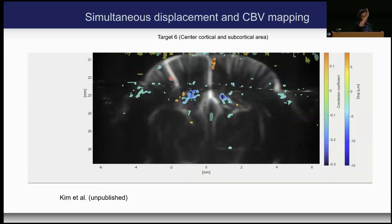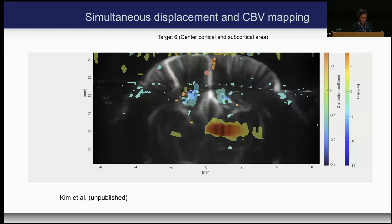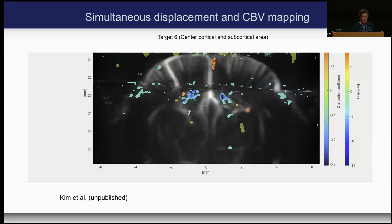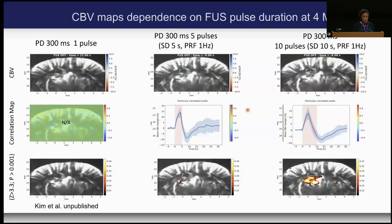When we target the center of the brain, both hemispheres light up — most CBV change is subcortically, relatively close to the hippocampus and thalamus. This varies with pulse duration: with one pulse on the left hemisphere, the thalamic region near the hippocampus responds most. As we increase the number of pulses, it responds more and more — you can see more red displacement. When we threshold with the correlation map, we also see the CBV change there. Similarly, you can see the effect increasing with pulse duration and number of pulses. Pressure also matters — from nothing at 1 MPa to a large response at 4 MPa.